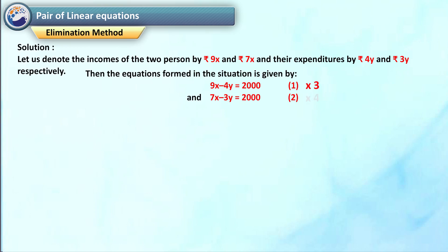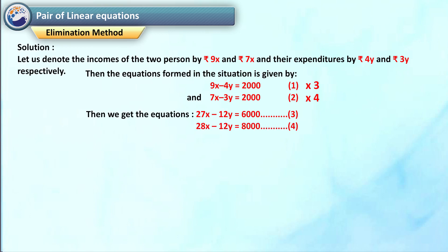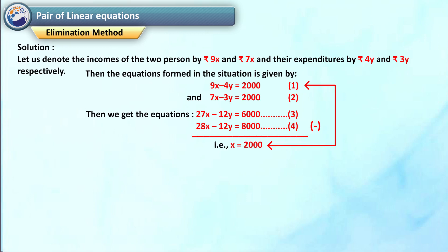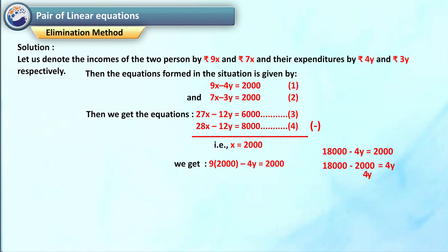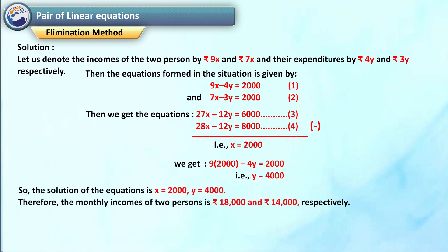Multiplying equation 1 by 3 and equation 2 by 4 to make the coefficients of y equal, we get 27x minus 12y is equal to 6000 — equation 3, and 28x minus 12y is equal to 8000 — equation 4. Subtracting equation 3 from equation 4 to eliminate y, we get 28x minus 27x is equal to 8000 minus 6000, that is x is equal to 2000. Substituting this value of x in equation 1, we get 9 into 2000 minus 4y is equal to 2000, that is y is equal to 4000. So the solution is x is equal to 2000, y is equal to 4000. Therefore the monthly incomes of the two persons are rupees 18000 and rupees 14000 respectively.